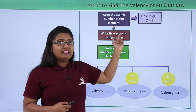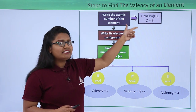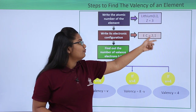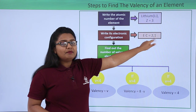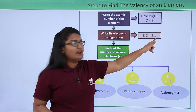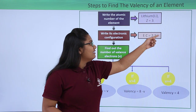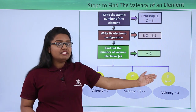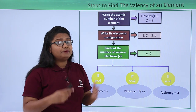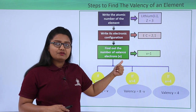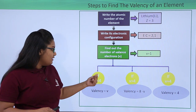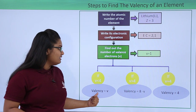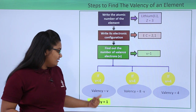For lithium, the atomic number is 3. We write the electronic configuration as 2, 1. We clearly see that the number of valence electrons is 1. We check the condition: is V less than 4? Yes, 1 is less than 4. So we follow that route — the valency equals V, which means the valency of lithium is 1.